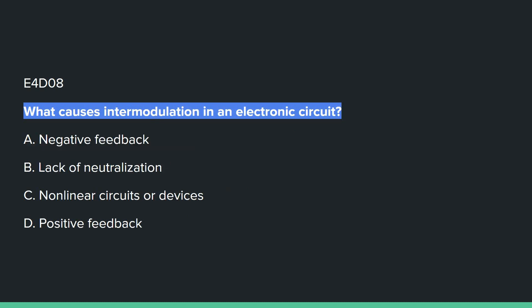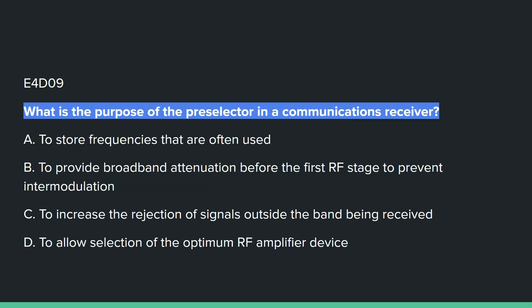E4D08: What causes intermodulation in an electronic circuit? Answer C: non-linear circuits or devices.